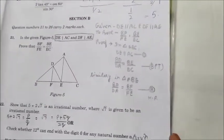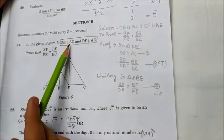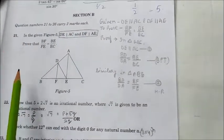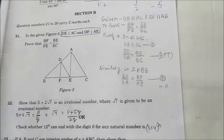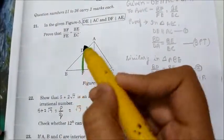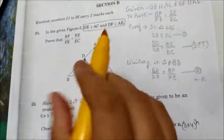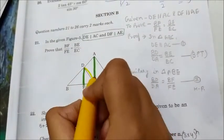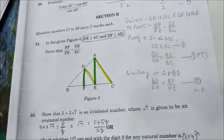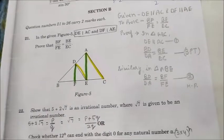Question number 21: In the given figure, DE is parallel to AC and DF is parallel to AE. Prove that BF upon FE is equal to BE upon EC. We have two triangles. DF is parallel to AE and DE is parallel to AC are both given. We write these in 'Given' and what we need to prove in 'To Prove.'